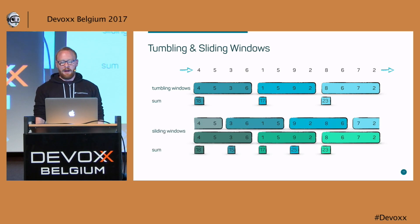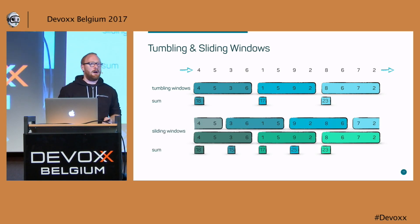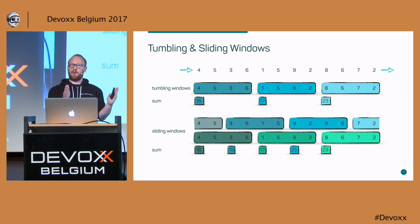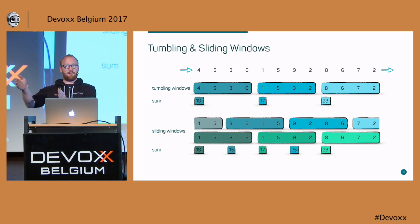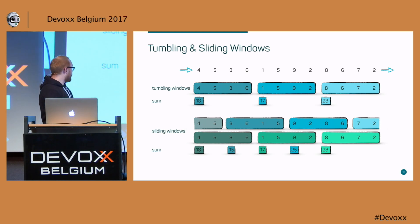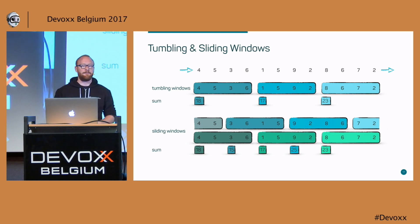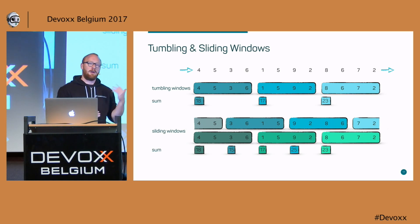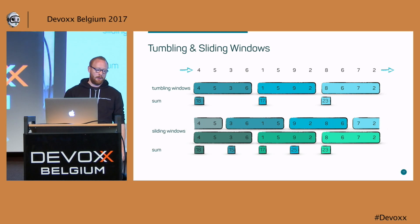The sliding window is similar but with an additional sliding interval. With a window size of four seconds and a sliding interval of two seconds, we move the four-second window every two seconds, creating overlapping windows. This is what you use for a sliding average over a stream.